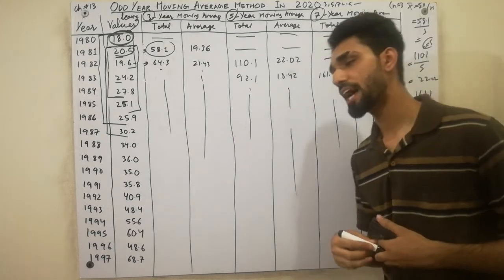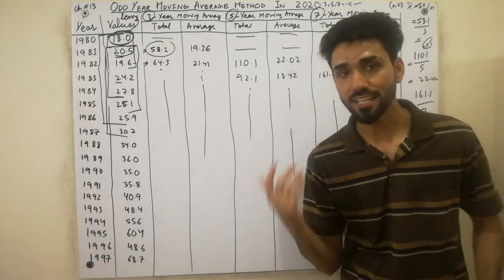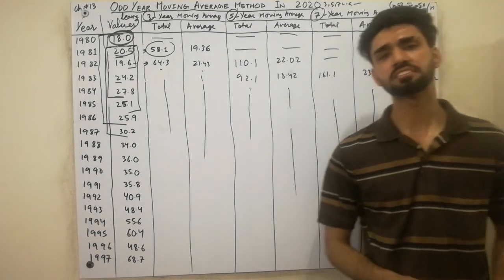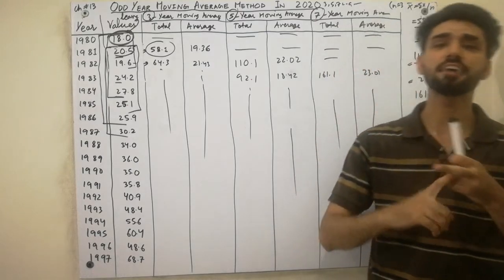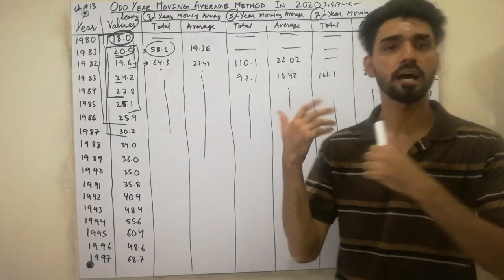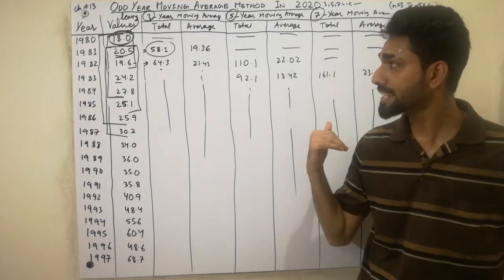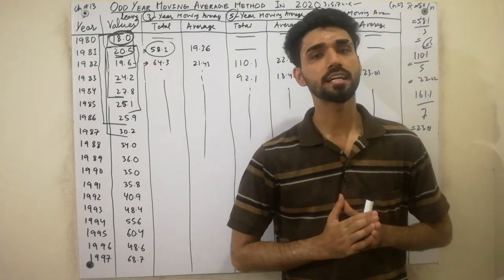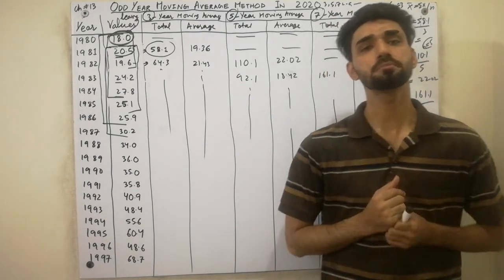I hope that you have cleared the concept in finding the Odd Moving Average method. That method is very simple and easy. I calculated 3-year, 5-year, and 7-year moving averages, and so on up to 9. Thanks for watching the video. If you like this video, please subscribe to my YouTube channel and press the bell icon so you don't miss notifications for my new lectures. Goodbye.